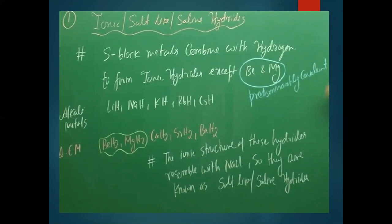Ionic hydrides are also called salt-like hydrides because their structure resembles sodium chloride, which is a common table salt. In class 12 you will study about structures in the chapter on solids. All ionic hydrides form a lattice with the same structure as common salt, which is why they are called salt-like or rock salt hydrides.